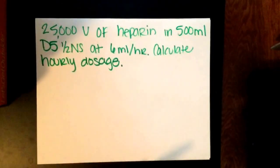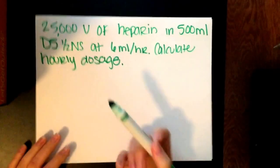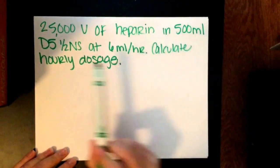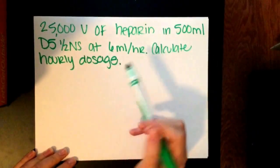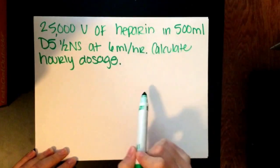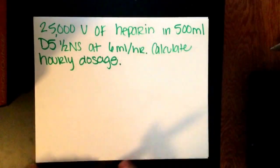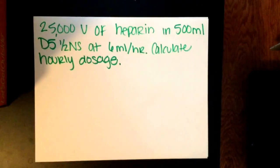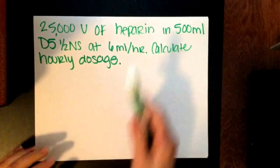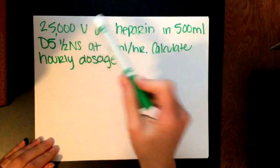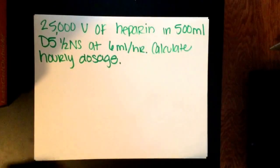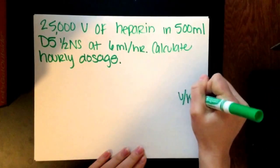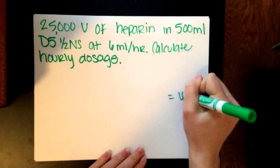Let's work on a heparin problem. Let's say you receive an order to administer 25,000 units of heparin in 500 milliliters of D5 half normal saline at 6 milliliters per hour. Calculate hourly dosage. We don't want milliliters per hour, we want the dose. So what we're looking for is how many units of heparin is going in per hour. That's the end product: units per hour.